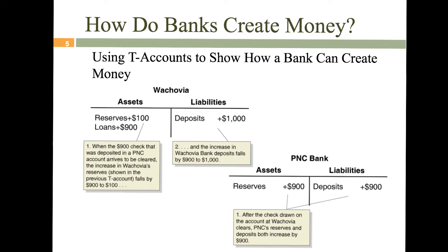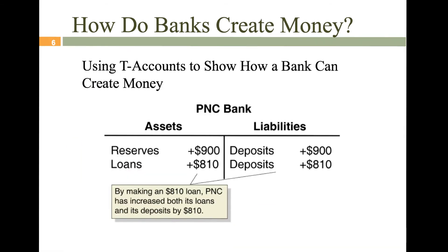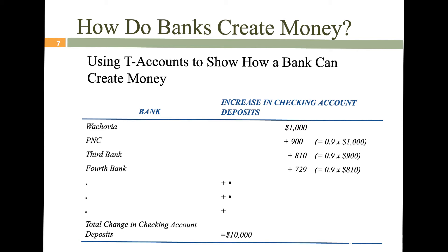From the time somebody walked in and deposited $1,000, the actions of Wachovia led to a loan which is deposited at PNC, and now we have an extra $1,900 — the system had a $1,000 increase, and yet there's $1,900 floating around. And that system will continue: that $900 deposit will be loaned out, up to the maximum of 90%, producing another $810 loan. This will continue until you have made all the maximum loans. What we're showing here is the maximum amount the banks could create out of an initial $1,000 deposit.